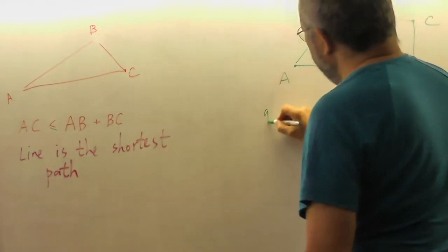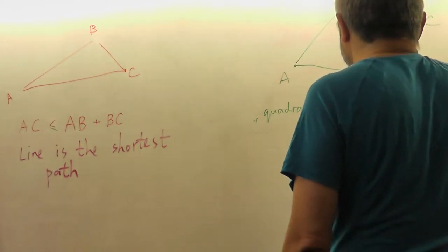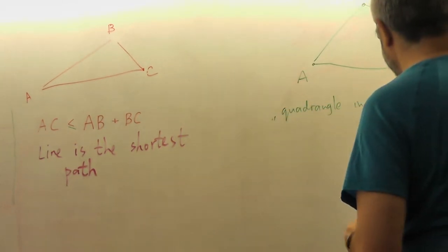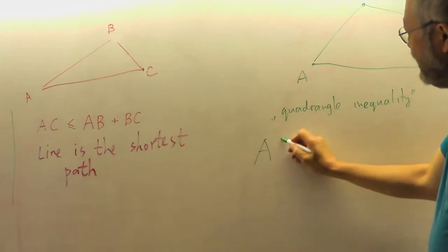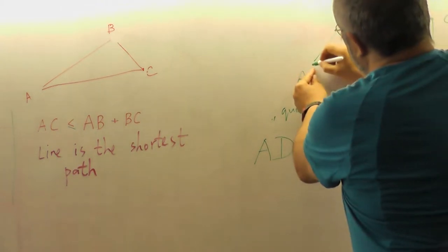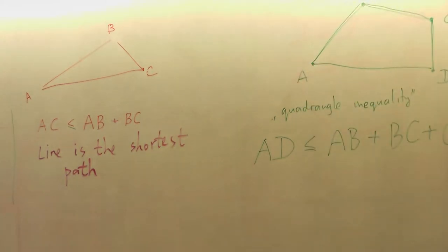And I want to prove, I don't know what can be called, quadrangle inequality. Usually people don't say it like this, just to show the similarity. And the quadrangle inequality is that AD is less or equal than what? AB plus BC plus CD. So if we take this line going to this and this, we take a longer path, a longer path than AD.